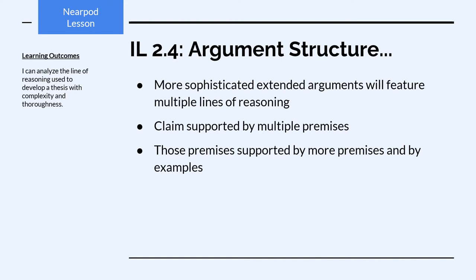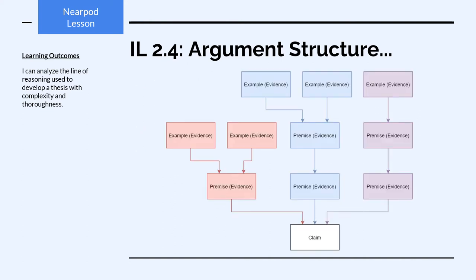You're going to see multiple lines of reasoning where that primary claim is supported by multiple premises, and those multiple premises are themselves supported by more premises and by examples. So the map of an extended argument might look something like this. We've got our central claim at the bottom, and then we've got three different lines of reasoning branching off supporting that claim. The first is a single premise supported by a couple of examples. The second is a premise supported by another premise, which is supported by examples. And in purple, a premise supported by another premise illustrated by just one example. A primary claim in an extended argument is usually supported by multiple lines of reasoning.